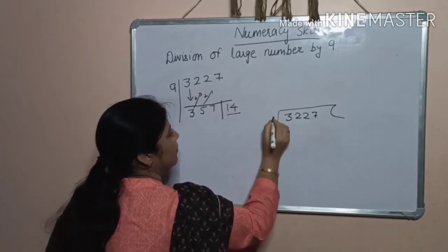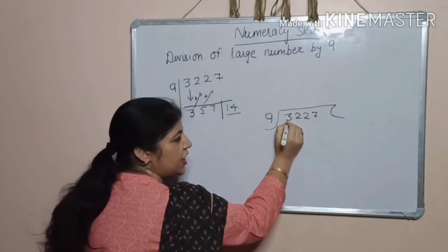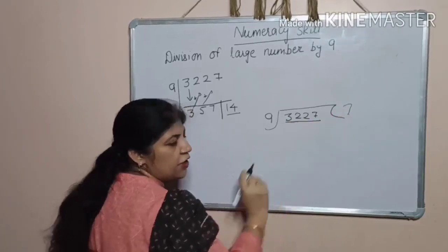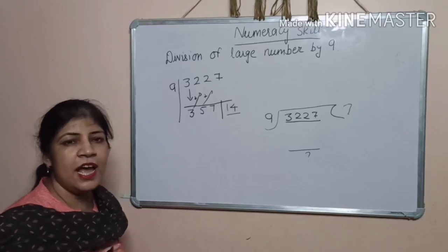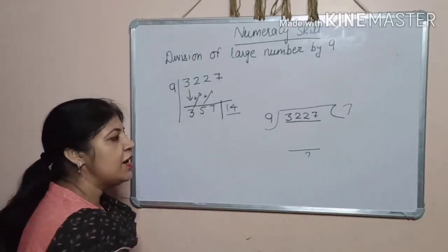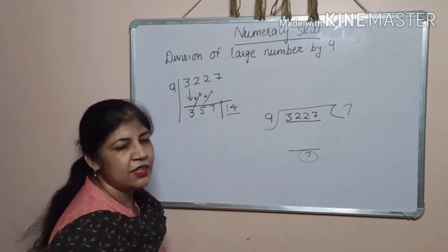this we call divisor. It is dividend and here you get quotient and this is the remainder. And you know very well, remainder is always less than the divisor.